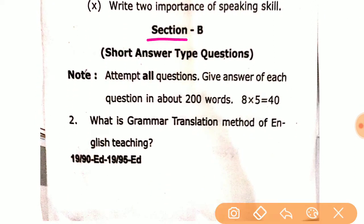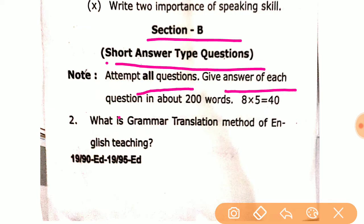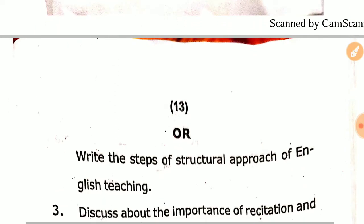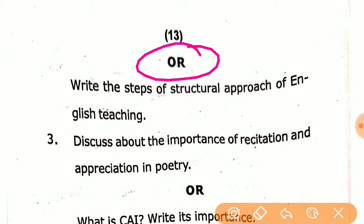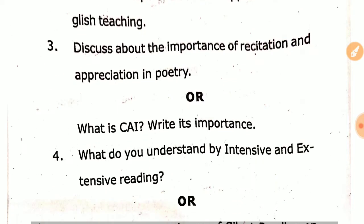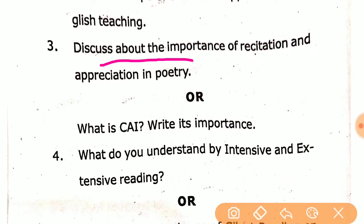Section B: Short answer type questions. Attempt all questions. Give answer of each question in about 200 words. Q2: What is the grammar translation method of English teaching? Q3: Write the steps of the structural approach of English teaching. Q3: Discuss about the importance of methods and approaches in poetry.